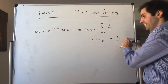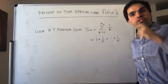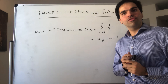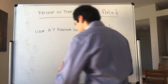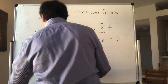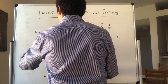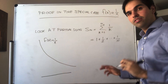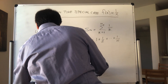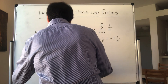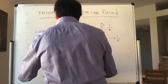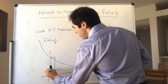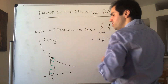The idea is to interpret this sum in terms of areas of rectangles, and in particular to compare it with the area under the graph of the function, which is just the integral. Consider again our function f of x equals 1 over x and the following rectangles. The first one is the rectangle with base from 1 to 2 and height 1, so this height is 1 which is f of 1. The base is 1, the height is 1, so the area is 1.